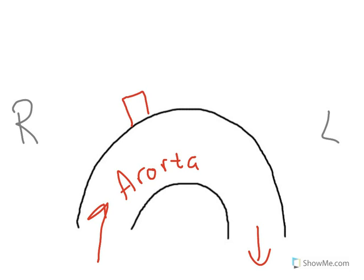This is the brachiocephalic trunk. The brachiocephalic trunk is the one that supplies the right arm and the right head. We'll come back and revisit this at the end for clarification, but its name tells you quite a bit about what it does.